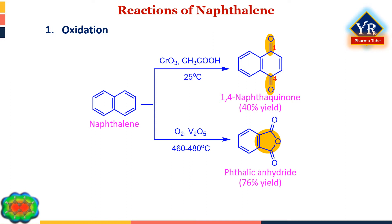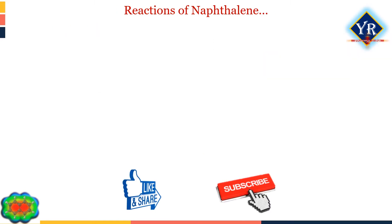Oxidation of certain naphthalene derivatives destroys the aromatic character of one ring and yields diketo compounds known as quinones. Because of this tendency to form quinones, it is not always feasible to prepare naphthalene carboxylic acids as we do benzoic acids by oxidation of methyl side chains. Phthalic acid is used in the manufacture of resins, paints, dyes, and plastics.